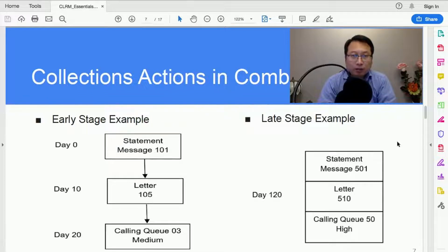Day zero is on the cycle day when the statement is generated. Typically you print the statement message called statement message 101. Each number represents a certain verbiage.